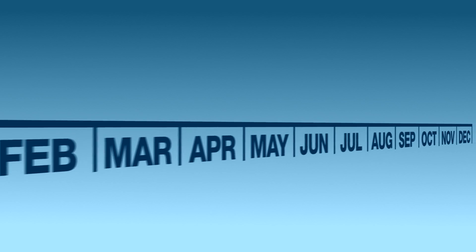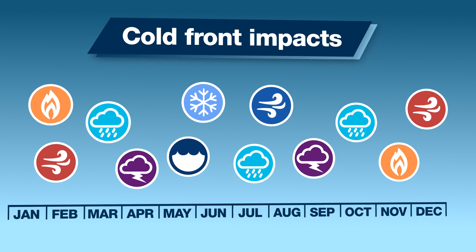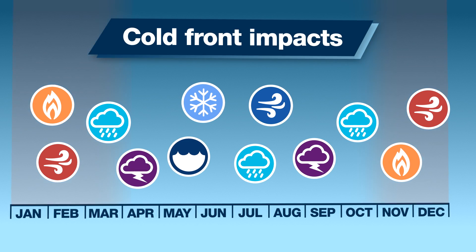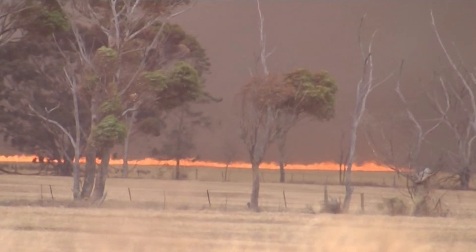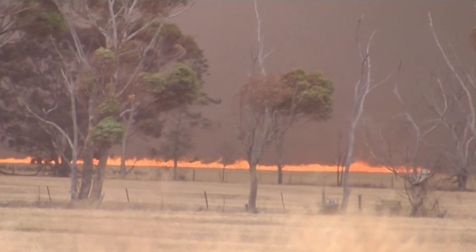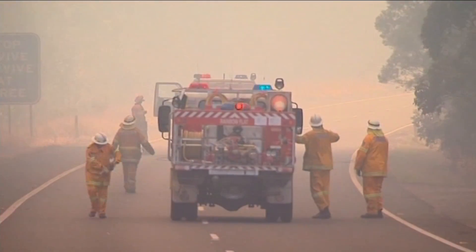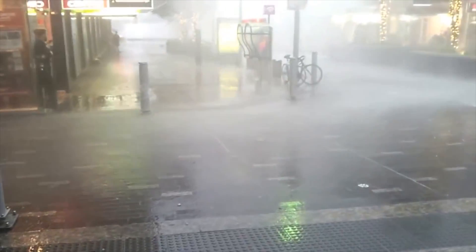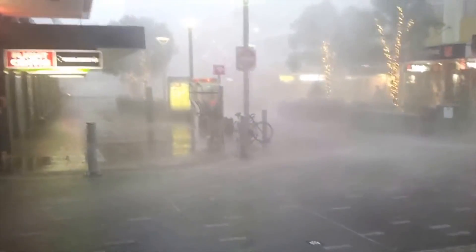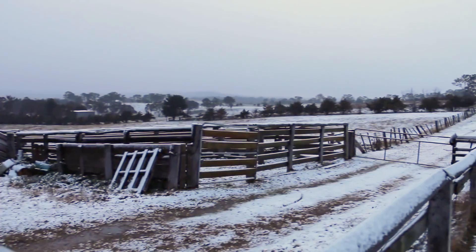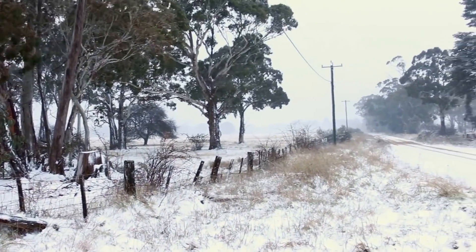Cold fronts occur all year round but they have different impacts depending on the time of year. In summer, hot and dry conditions ahead of the front combined with gusty winds and a strong wind change can lead to increased fire danger. While in winter, damaging winds and heavy rain are possible with the passage of a strong cold front, and snow can develop in the coldest air behind the change.